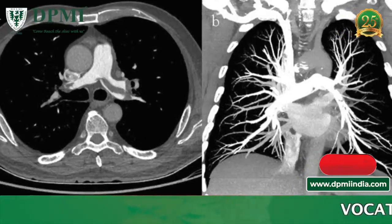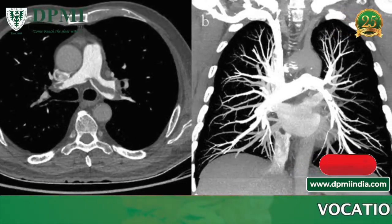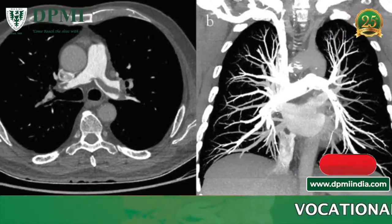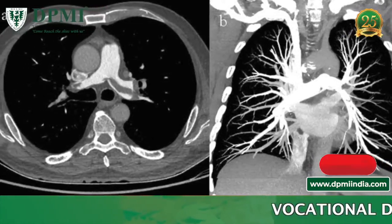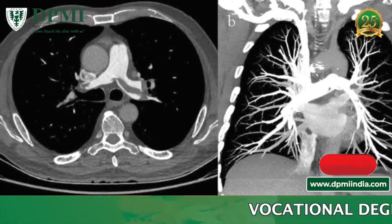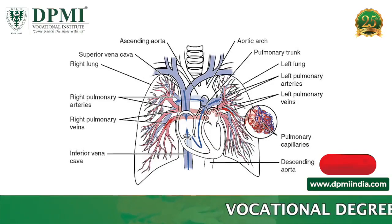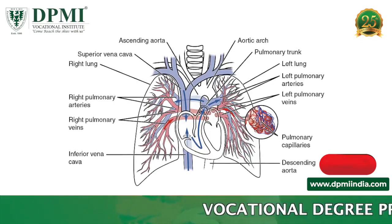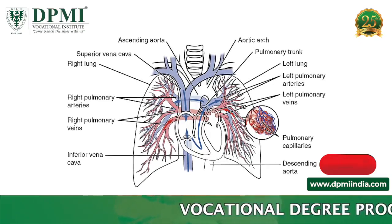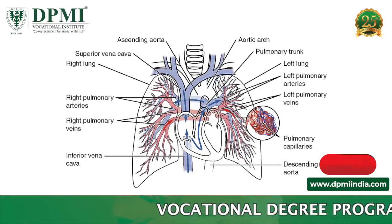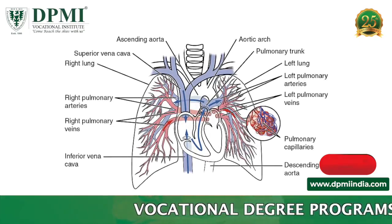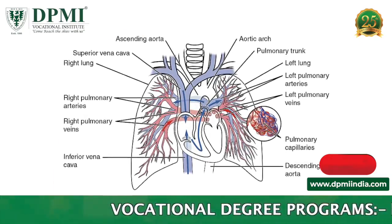Pulmonary angiography is a procedure in which a contrast medium is used to see inside the arteries that carry deoxygenated blood away from the heart towards the lung.